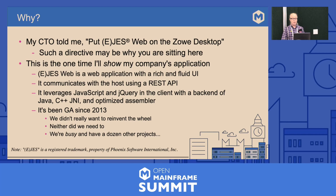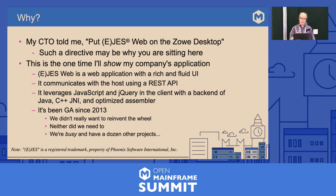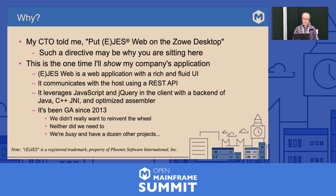My CTO told me: put EJES web on the Zoe desktop. Such a directive may be why you are sitting and listening to this today. This is the one time I will show my company's application. EJES web is a web application with a rich and fluid UI. It communicates with the host using a REST API. It leverages JavaScript and jQuery in the client with a back end of Java, C++, JNI, and optimized assembler. It's been GA since 2013. We didn't really want to reinvent the wheel, and we didn't need to.